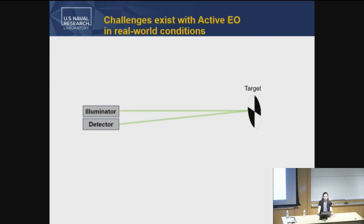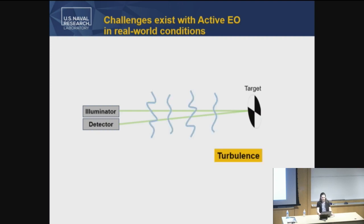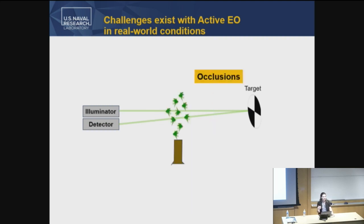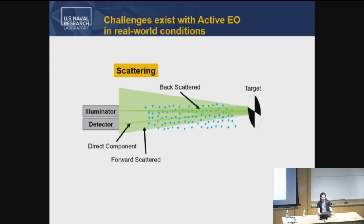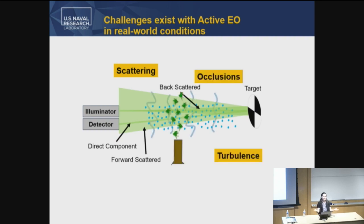When we think of an active electro-optic system, we have our illuminator and our detector, and ultimately we would like to illuminate the target and detect that return signal. But turbulence may be present, messing up the light going from the illuminator to the target as well as the light coming back to the detector. We may have obscurations blocking light, or scattering. The light illuminating the target has backscatter, a direct component, and forward scatter — all causing interference on what we're trying to detect.